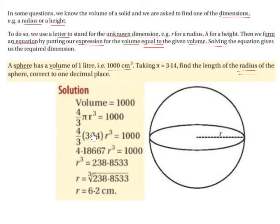Then 4 over 3 multiplied by 3.14 is 4.18667 r cubed, so that's equal to a thousand.